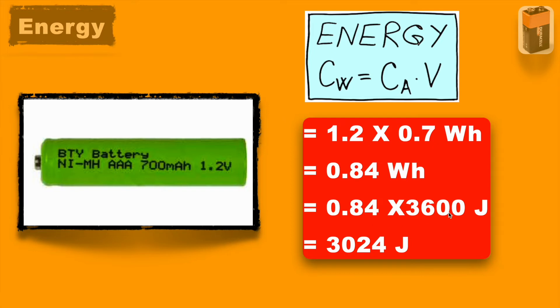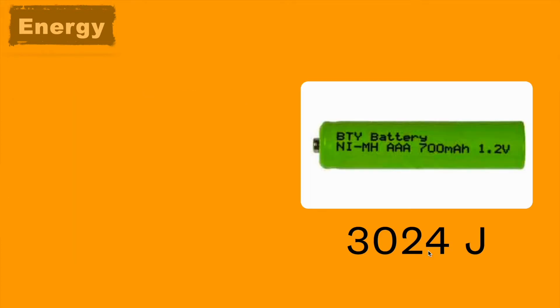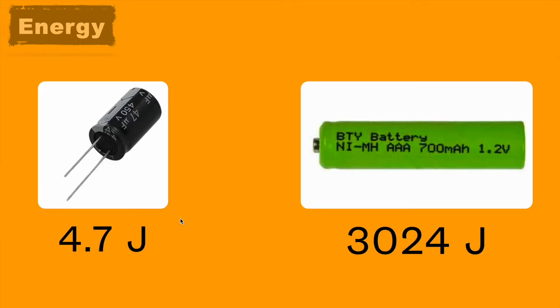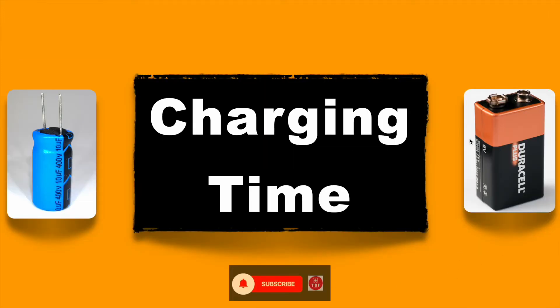So 0.84 into 3600 joule, so this battery can store 3024 joules of energy. So now if we compare both, capacitor can store only a few joules of energy while a battery can store huge energy inside it.